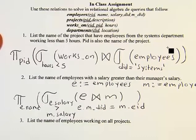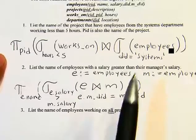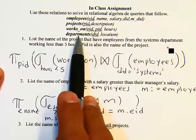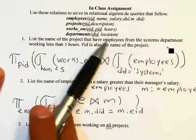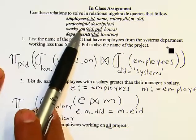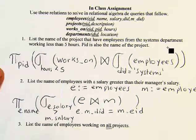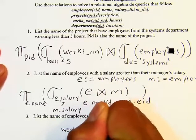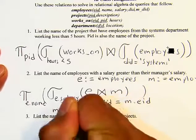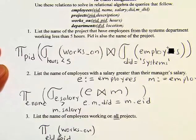For number three, we want the names of employees working on ALL projects. The keyword 'all' means we'll need to use division. We start with works_on and will divide by projects to get the employee IDs of those working on all PIDs.